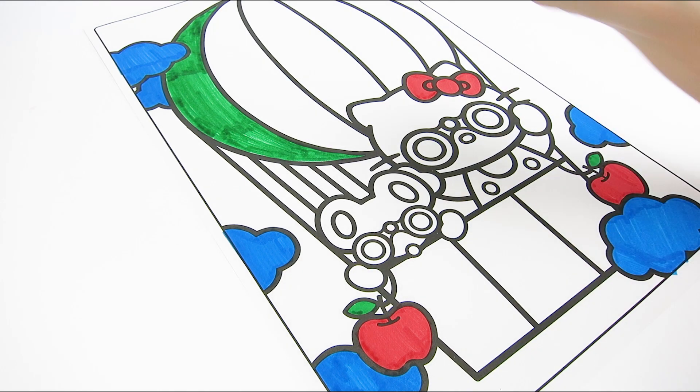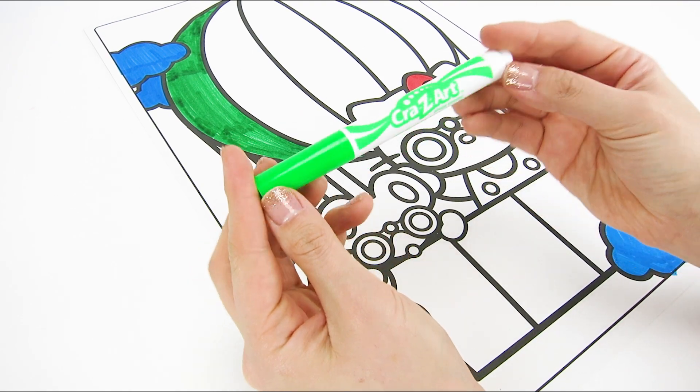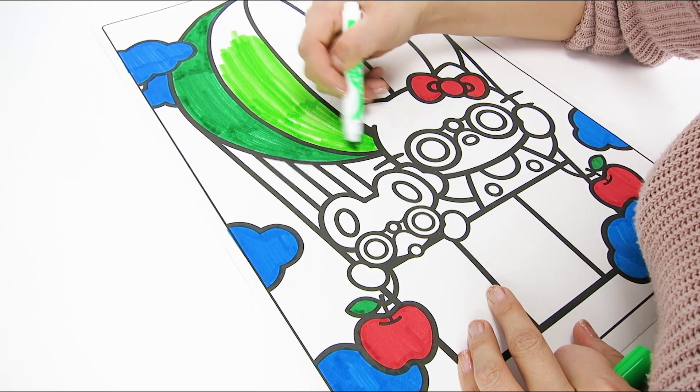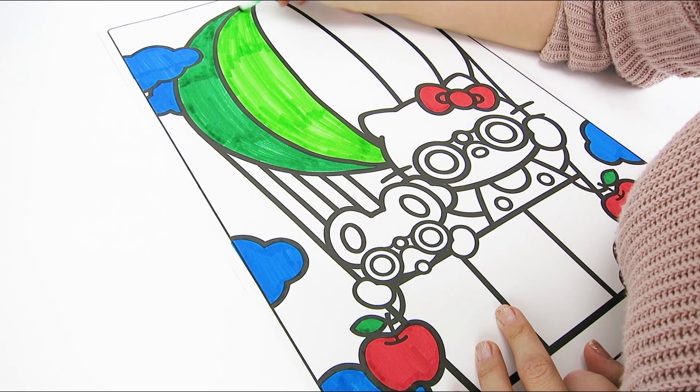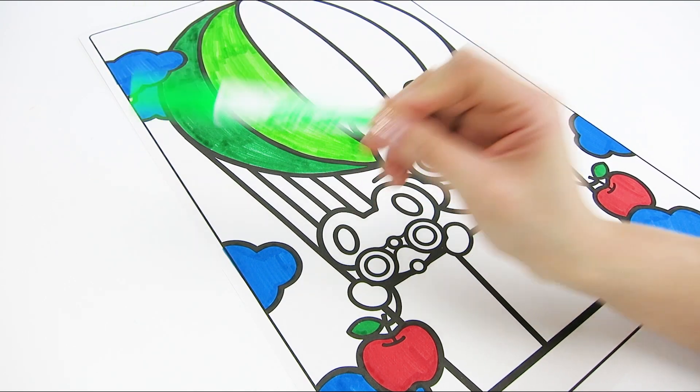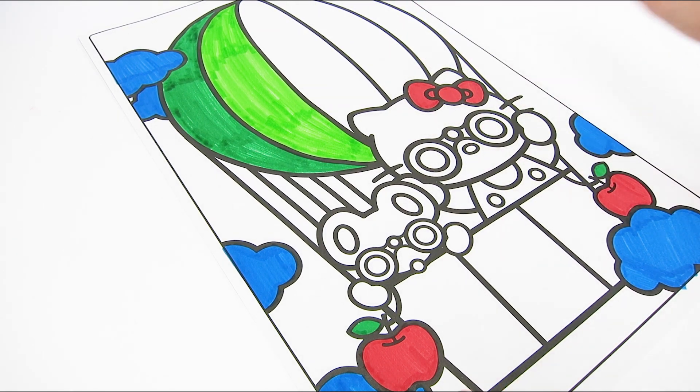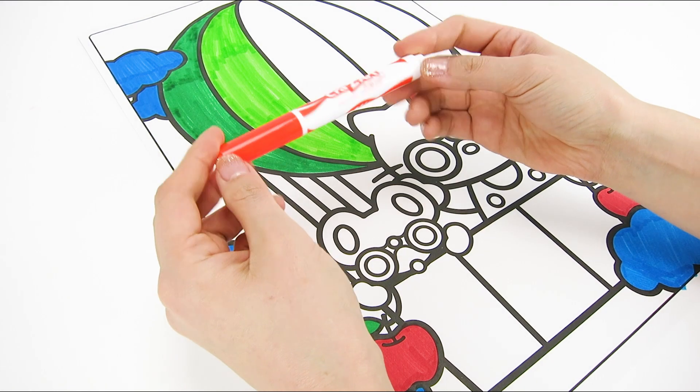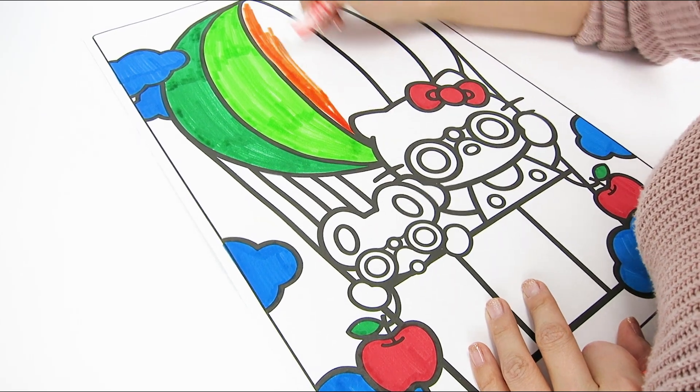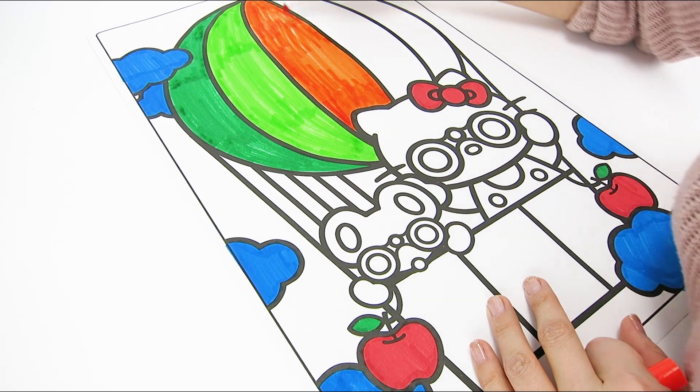But what about the next stripe? Let's use the brother color, lime green. Lime green and dark green sure do look great together. All right, we have three more stripes. How about we use another bright color, like orange. I love orange, both the color and the fruit.